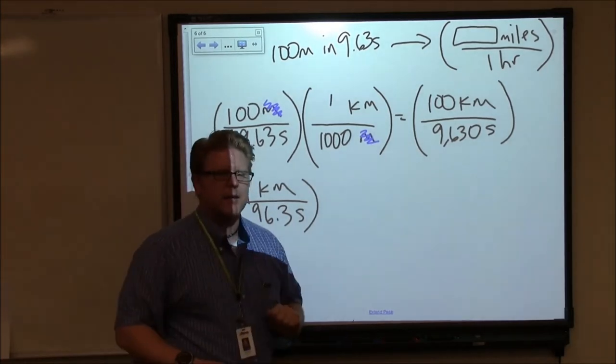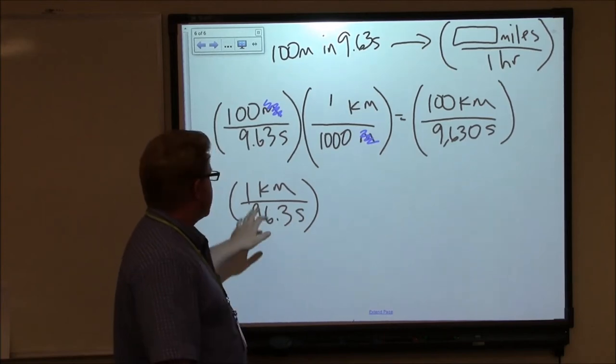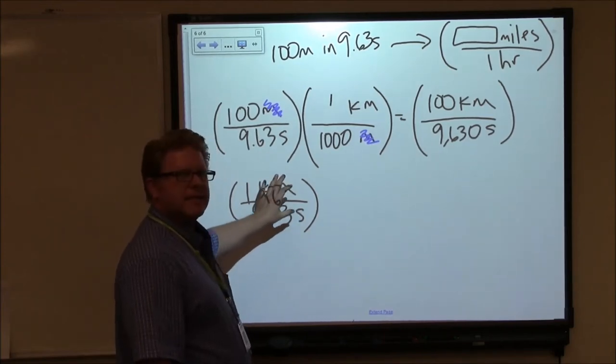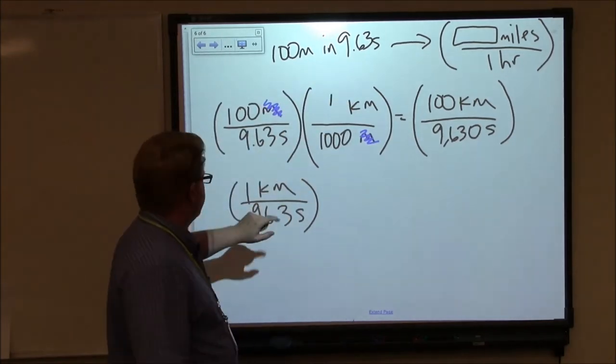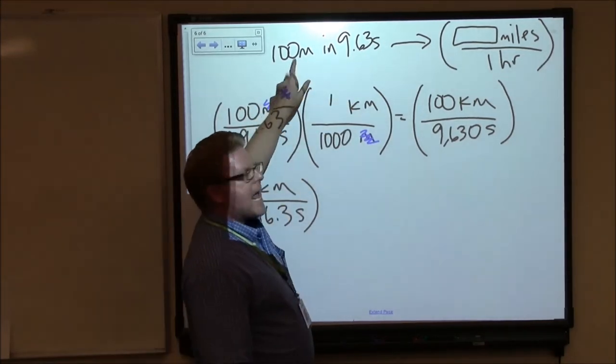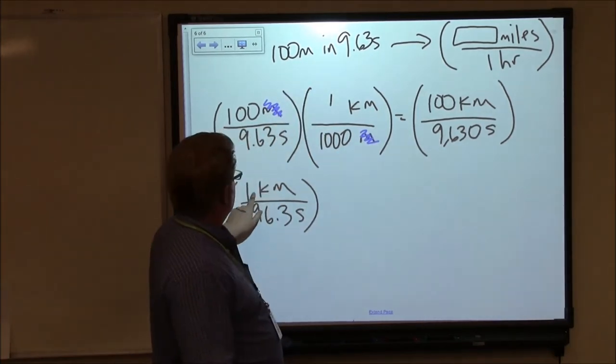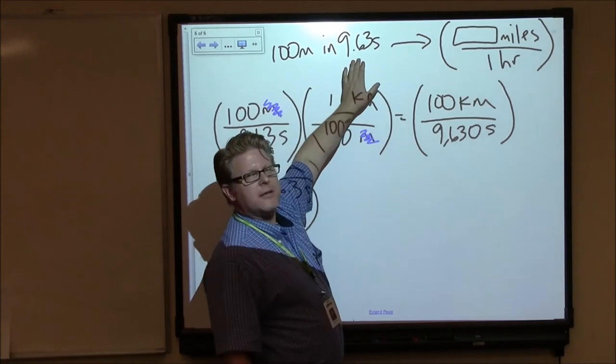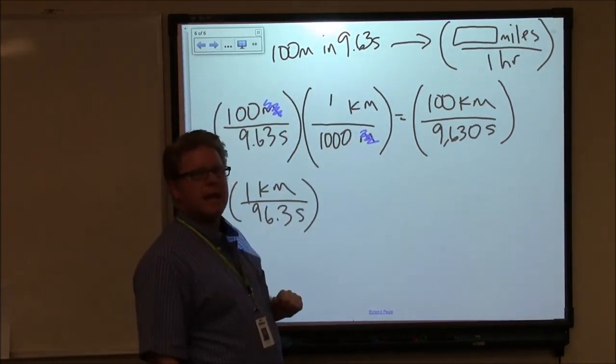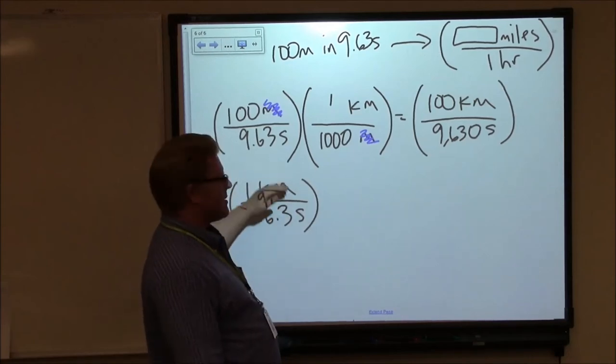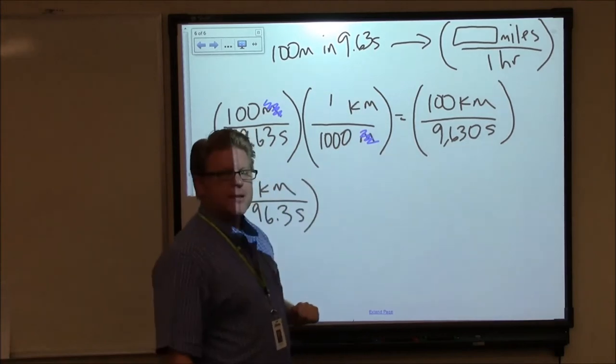Now the question we're asking, and the question you should be asking as you go through this kind of process, is does this number make sense? Does this correlate or does it relate to this statement? Well, let's see. There are 10 100-meter sections in a kilometer. So if we take 9.63 and multiply it by 10, sure enough, we get 96.3 seconds. So this statement or this ratio correlates with this nicely. That's good.